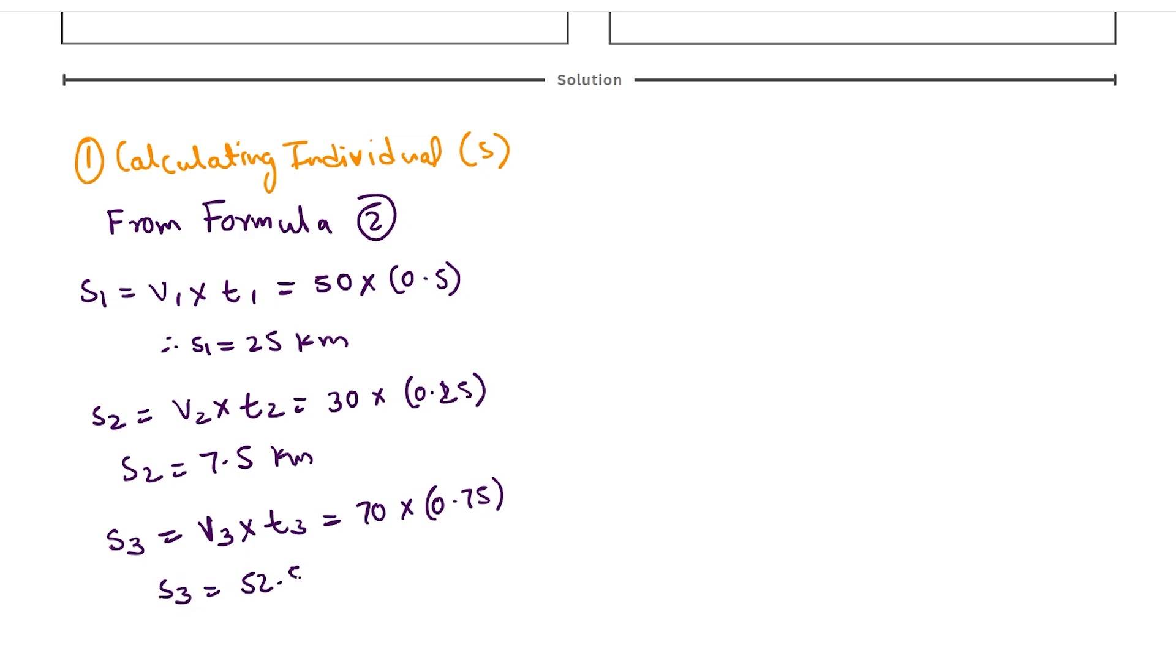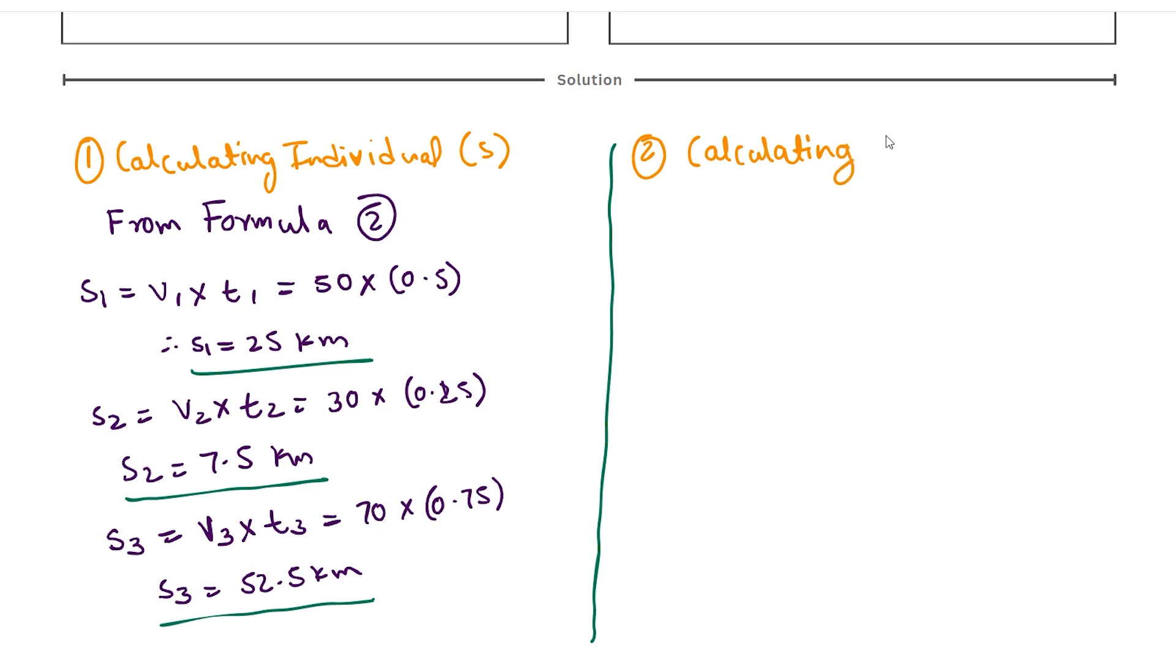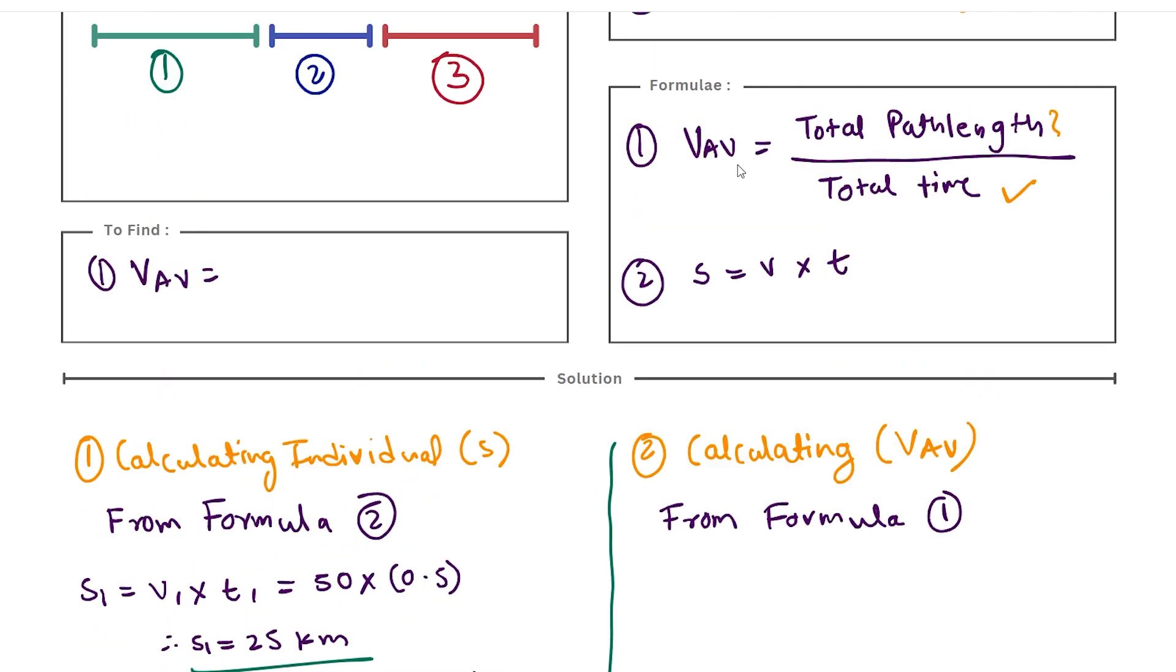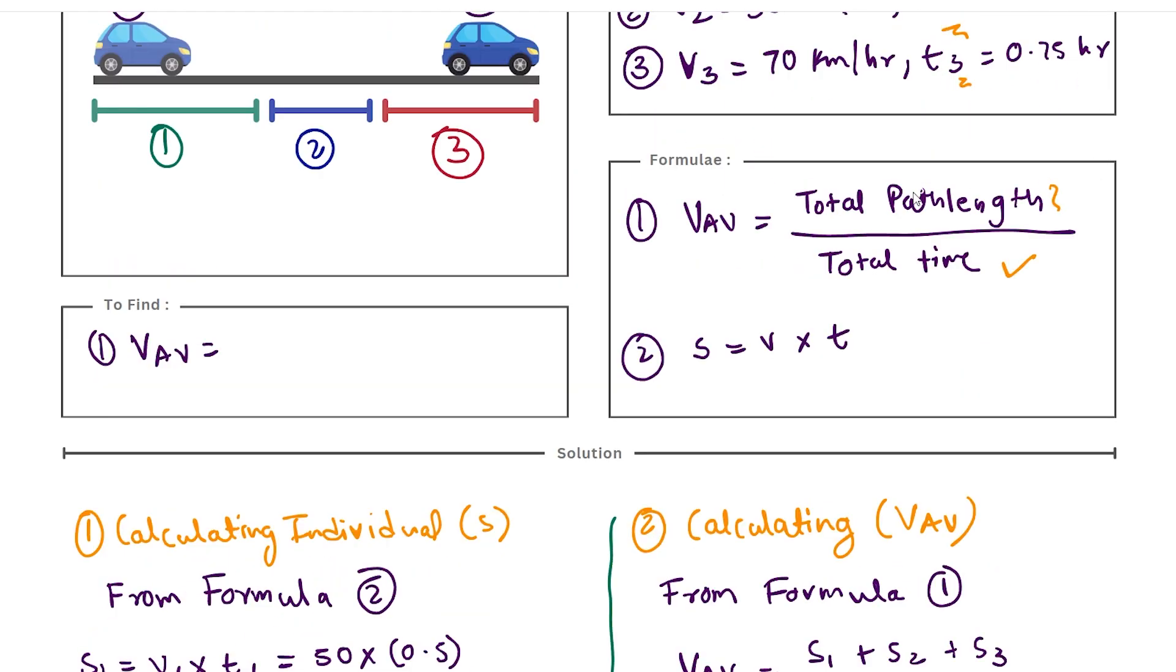So with this we have calculated all the individual distances and now the only part that's remaining for us is to calculate the average speed using the formula. So the second part of our numerical is calculating average speed denoted by the symbol vav. We'll write from formula 1.